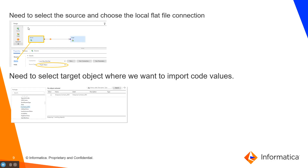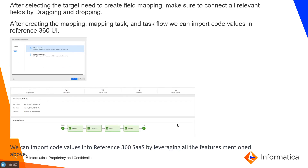We select the source as a flat file. In the target, we select the object where we want to import our code values. After selecting the target, we need to create a field mapping. Make sure to connect all the relevant fields by dragging and dropping. After creating the mapping, mapping task, and task flow, we can import the code values into Reference 360.